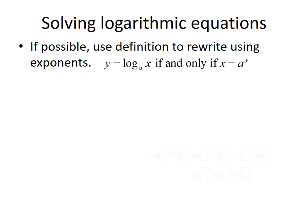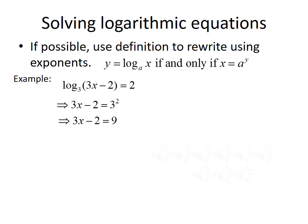Now let's talk about solving logarithmic equations. The first strategy is to use the definition to rewrite using exponents: y equals log base a of x becomes x equals a to the y. For example, solve log base 3 of 3x minus 2 equals 2. We rewrite as 3x minus 2 equals 3 squared, which is 9. Adding 2 to both sides gives 3x equals 11, and dividing by 3 gives x equals 11 thirds.